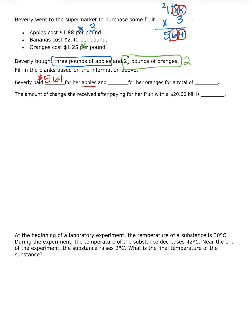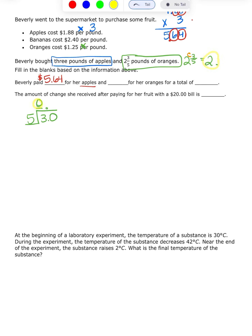Two and three-fifths — I know it's going to be a whole two, and then I cowboy-and-horse my three-fifths. Three is my cowboy; I divide. Five doesn't go into three, so we add a decimal. How many times does five go into 30? That would be six times. So two and three-fifths equals 2.6. But that's just the pounds — it doesn't ask how many pounds, it asks how much she paid for her oranges.